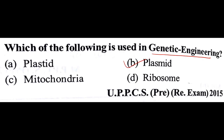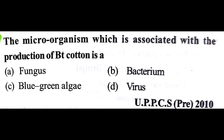Which of the following is used in genetic engineering? The answer is B: plasmid. The microorganism associated with the production of Bt cotton is actually a bacteria — by Bt we mean Bacillus thuringiensis.